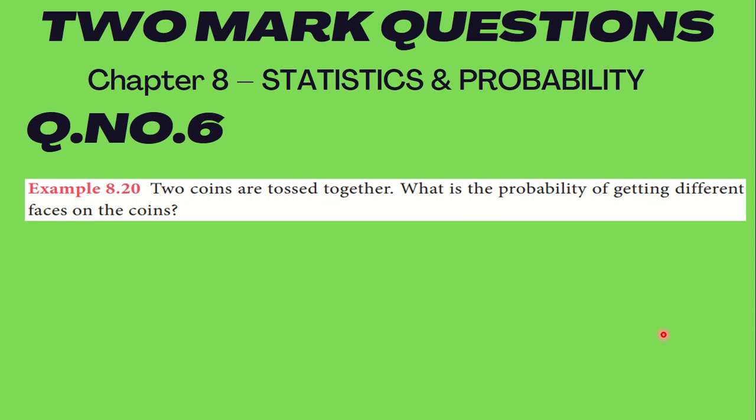Question number 6 is also very important — example 8.20. Two coins are tossed together. What is the probability of getting different faces on the coins? This is treated to be a very important question, so please make note of that and read accordingly, my dear children.